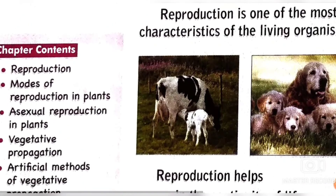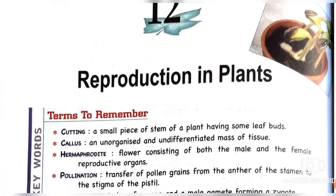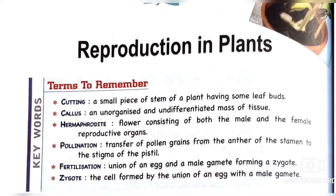So these are the chapter contents of our today's chapter. In today's lesson we will first learn about what is reproduction, what is the necessity of reproduction, and we will learn about asexual reproduction, sexual reproduction definition, and also the different methods of asexual reproduction. So let's start our today's lesson.